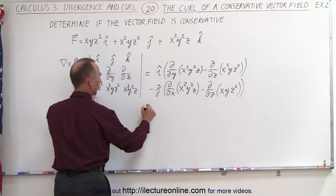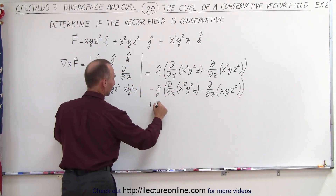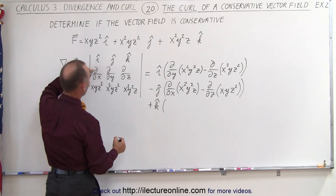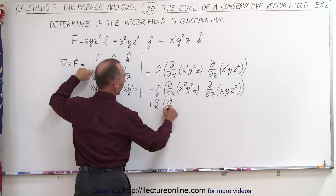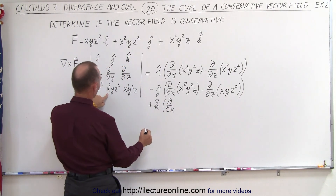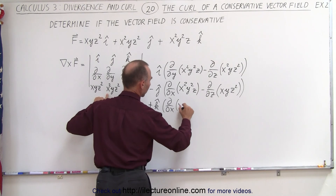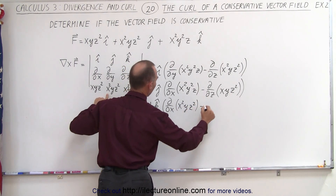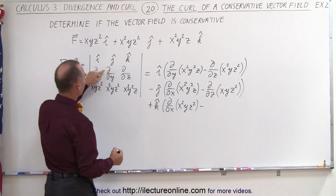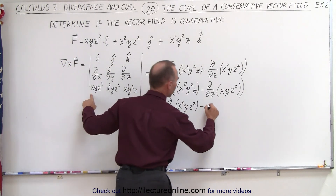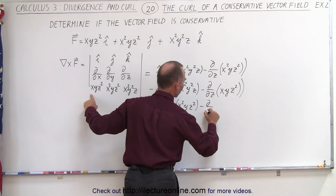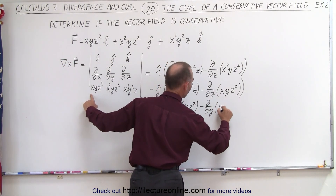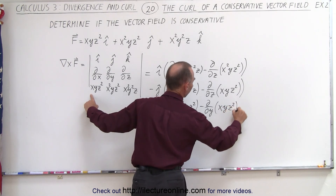And then we have plus k times. So now we take the partial with respect to x of x²yz² minus the partial with respect to y of xyz².